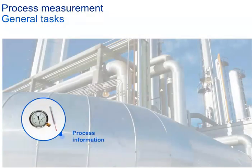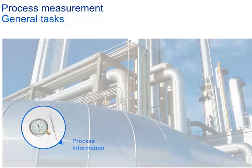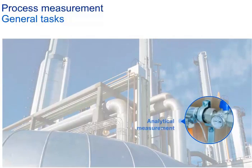In industrial processes, one of the main tasks is to get information about process conditions by measuring temperatures, pressures, flows, or the status of materials used for production. These measurements are essential to control the process. The analytical measurement provides additional information about the concentration or composition of materials used within a process.